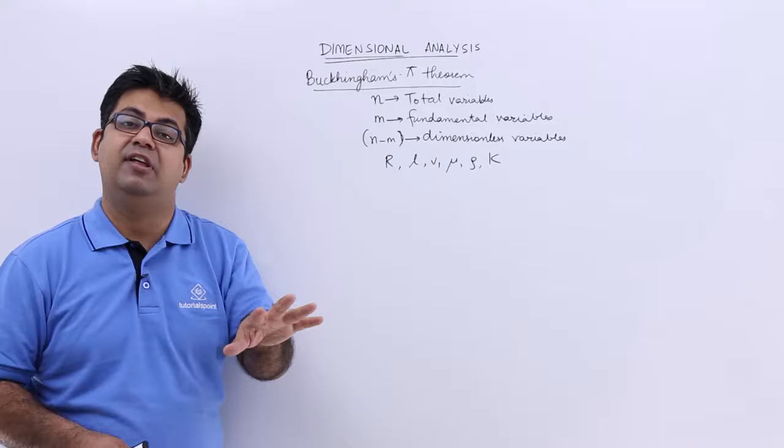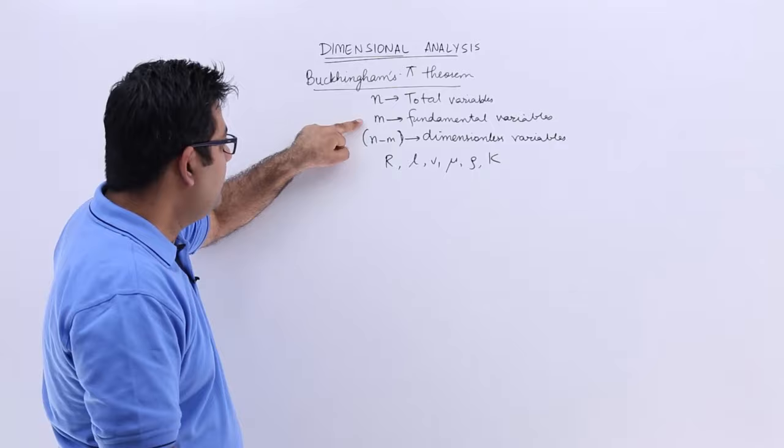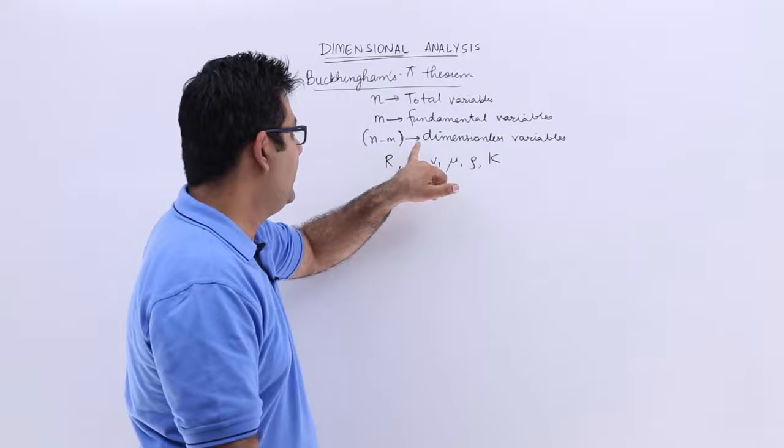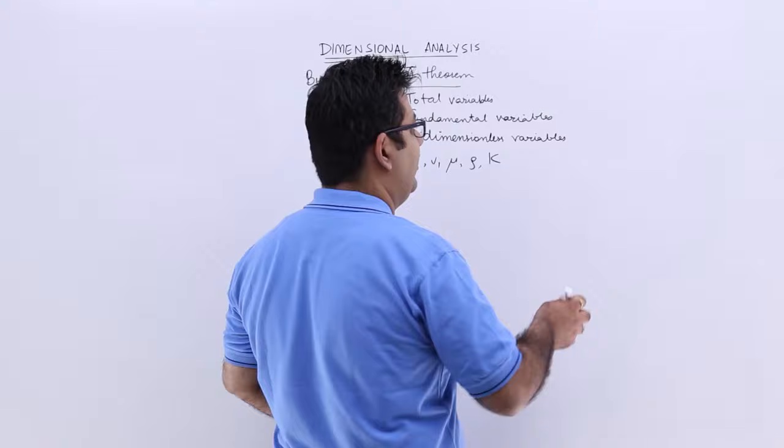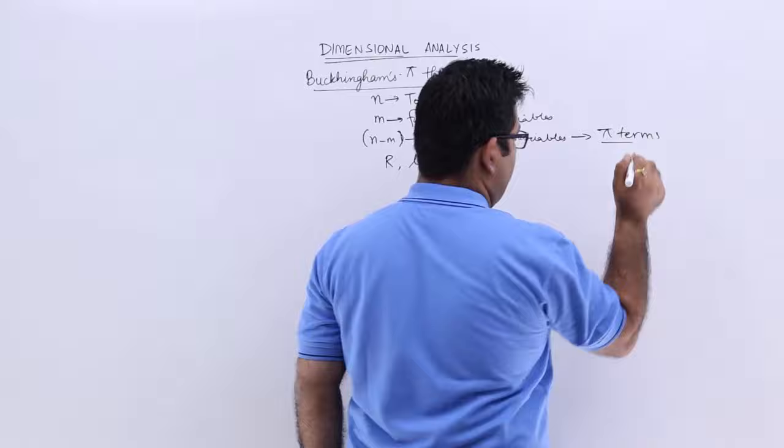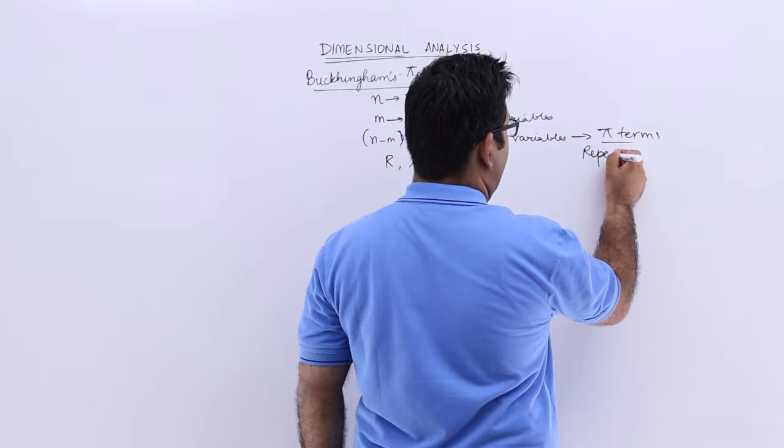Let us say you have n total variables and m out of them are fundamental variables. So n minus m dimensionless variables would have to be formed, and these dimensionless variables are called pi terms. We will have to choose repeating variables to create these pi terms.